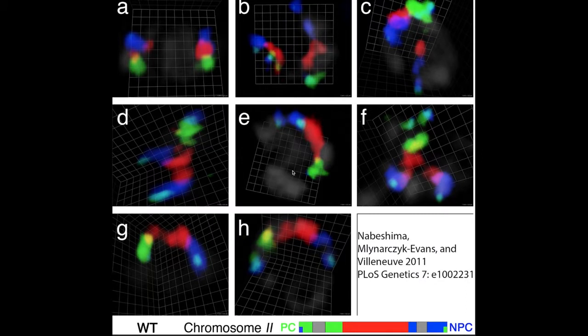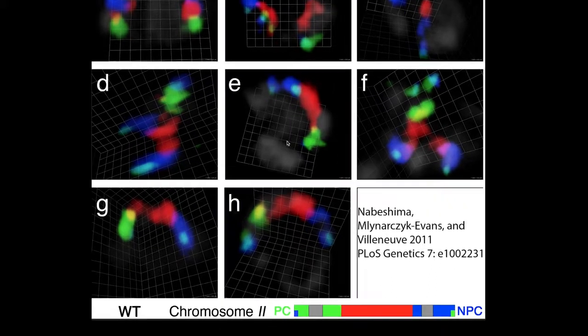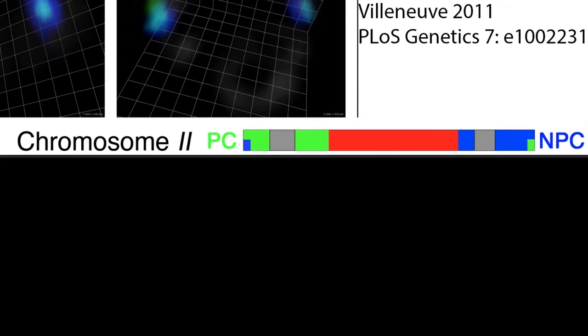The experiment was as follows. Using the known genome sequence of C. elegans and libraries that had all of the sequences from the genome, Nabeshima et al. made copies in vitro of sequences from different parts of chromosome 2, one of the autosomes, and labeled the copies with one of three different fluorescent labels.